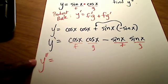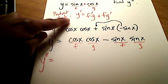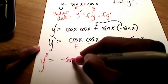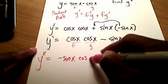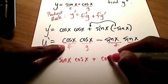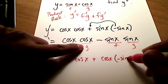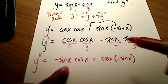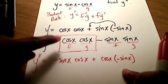Using the product rule for the second derivative: the derivative of the first term, cosine x times cosine x, gives us f prime — the derivative of cosine is negative sine x — times g, which is cosine x, plus f, which is cosine x, times g prime, which is negative sine x. So all of this is just the derivative of that first term.